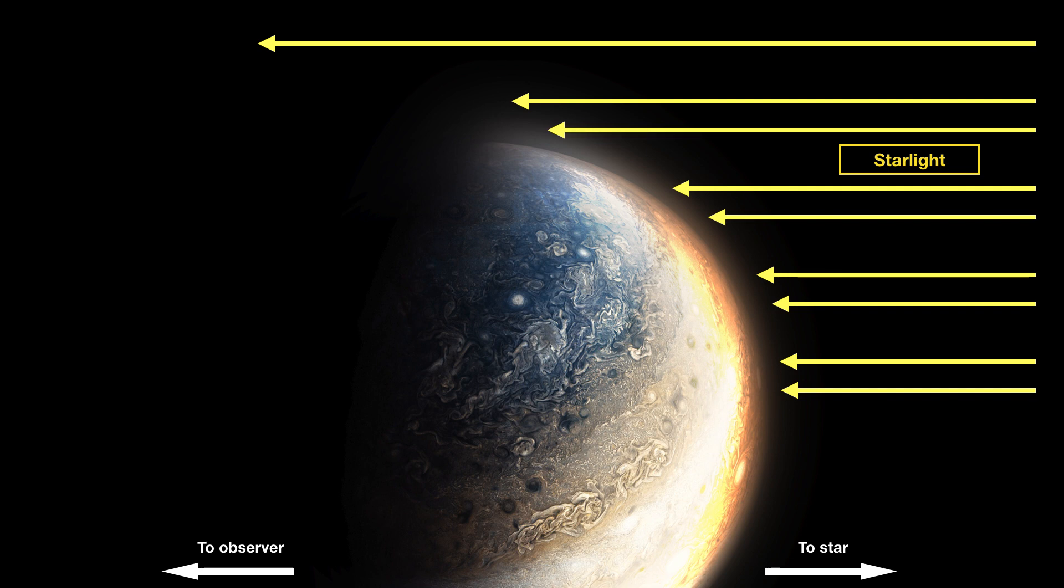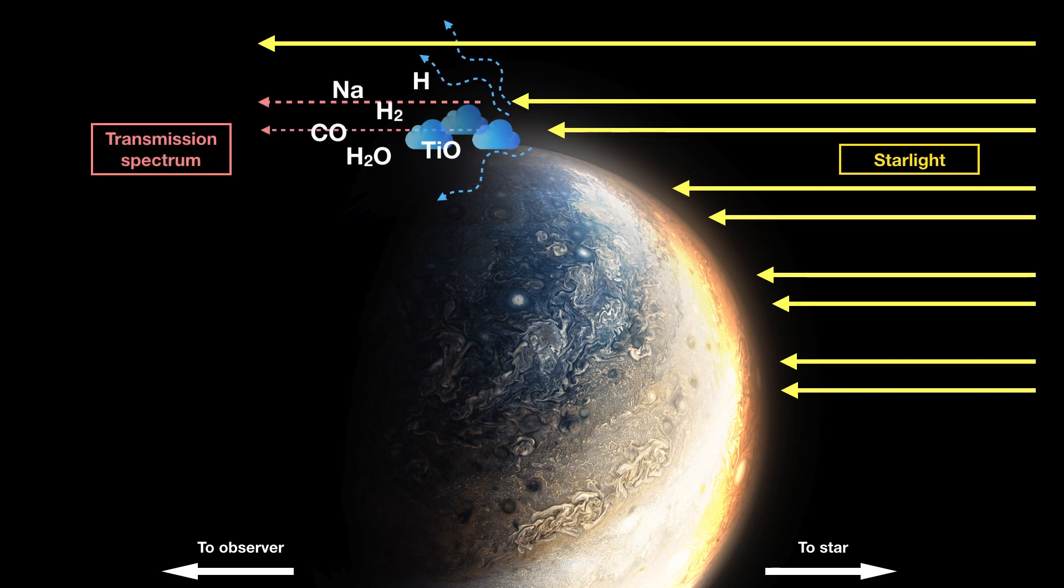Imagine a planet being in transit, meaning in between the star and the observer far away. Some starlight will fall onto the planet and be scattered or absorbed on the planet's illuminated day side. Most starlight will not hit the planet at all and will pass unhindered on its way towards Earth, but only a very small fraction of light will pass right through the upper layers of the atmosphere. Here it can be absorbed by atoms or molecules or be scattered depending on whether there are clouds or aerosol particles.